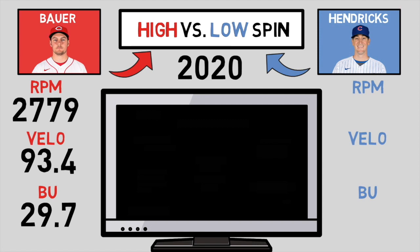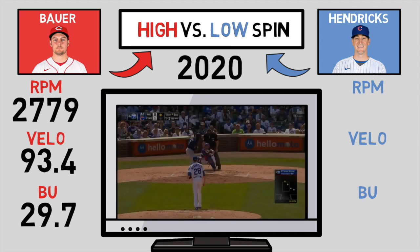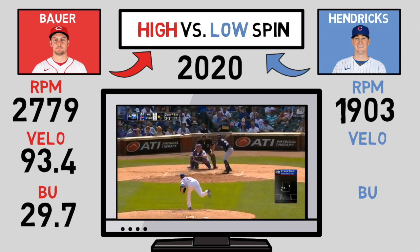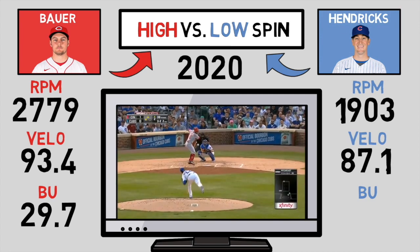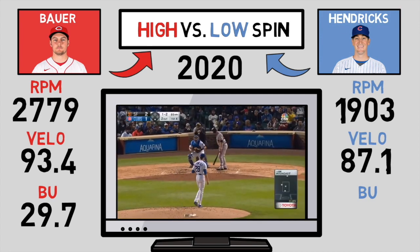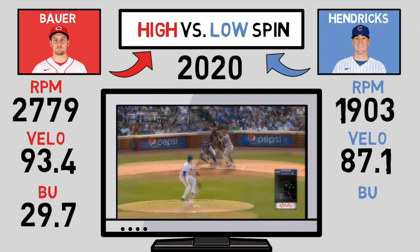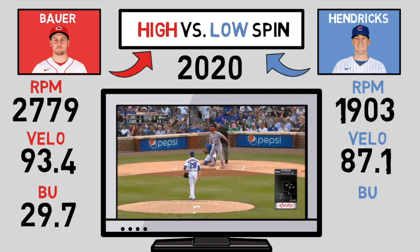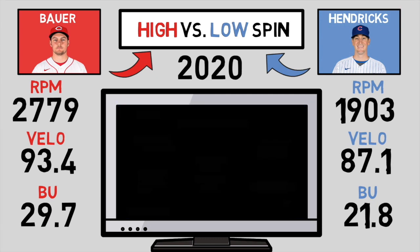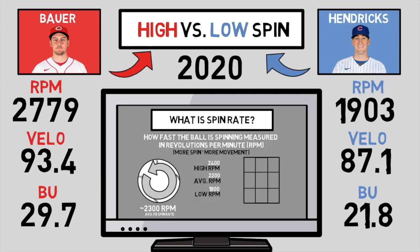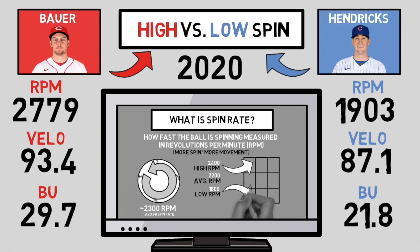Now let's take a look at Kyle Hendricks' stuff. Hendricks' average fastball spin rate was just above 1,900, and his average velocity came in a bit slower than Bauer's at 87.1 mph. This is why Bauer units are so important — is his spin rate lower than Bauer's strictly due to his velocity? Well, if we do our calculation again to take velocity out of the equation, we will see that Hendricks' spin was both below average in RPMs and in our Bauer units calculation. I made the claim earlier that pitchers with above average Bauer units should attack up in the zone, and below average should attack lower.